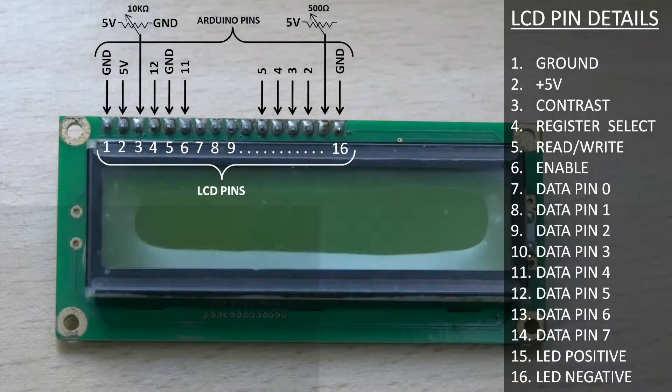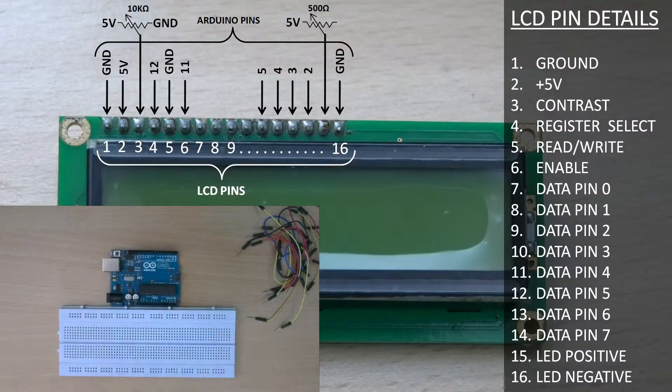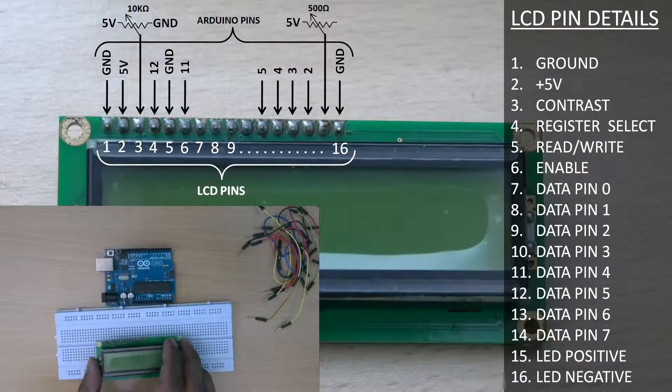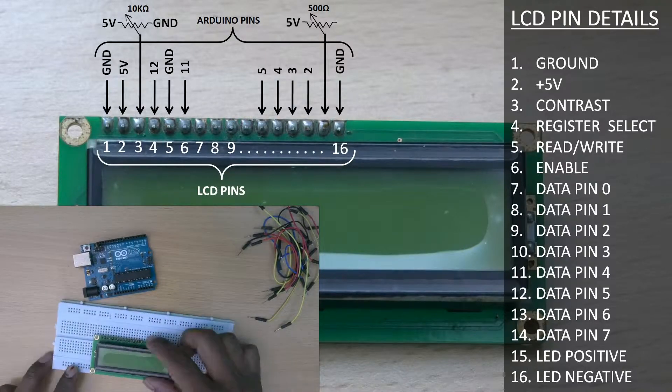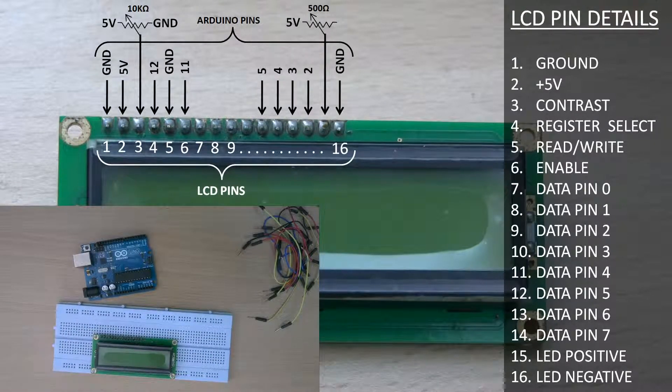This type of display has 16 connection pins. The pin number starts from extreme left. Pin 1 of the LCD is the ground pin which is to be connected to ground of the Arduino board.